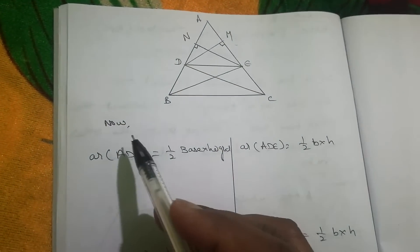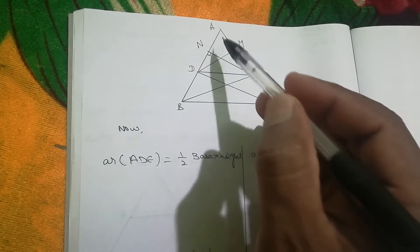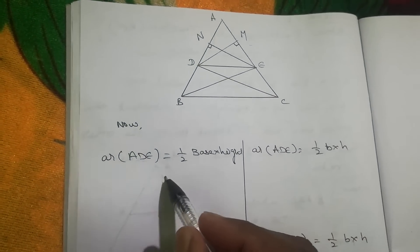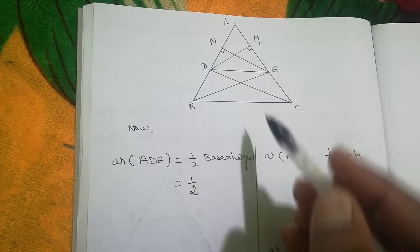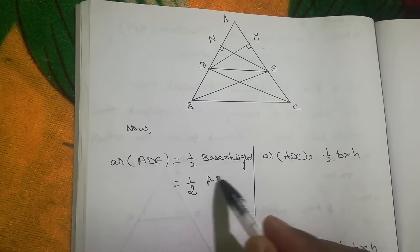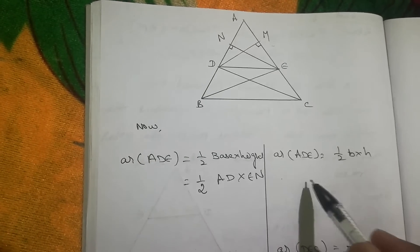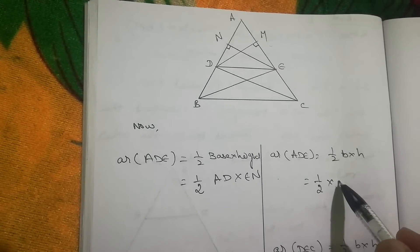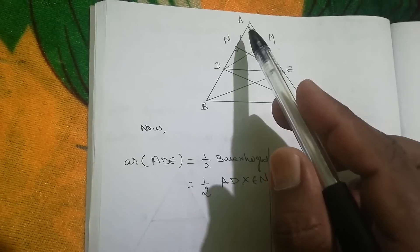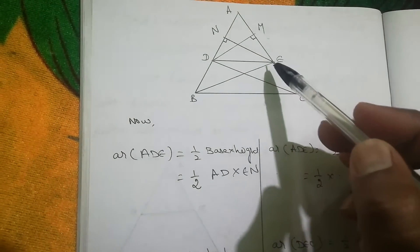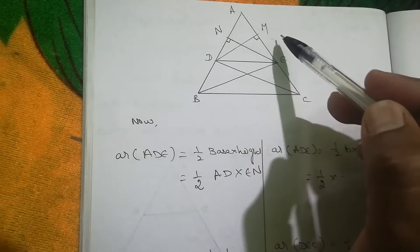Now for the proof. First, take triangle ADE. Using the area formula — half base times height — the area of triangle ADE with base AD and height EN equals half into AD into EN. Taking the same triangle ADE with base AE, the height is DM, so area equals half into AE into DM.